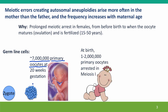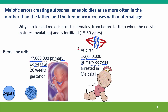Then those cells begin meiosis. A lot of them fall by the wayside, but when the baby is born, there are about 1 to 2 million of these primary oocytes left. And they're all arrested in meiosis 1 at metaphase — the stage when the homologous chromosomes are paired together, held together by the synaptonemal complex, and are lined up with the spindle fibers at the center of the cell, the place called the metaphase plate. These 1 to 2 million cells then stay in the middle of this very complicated and delicate cell division for a very long time.